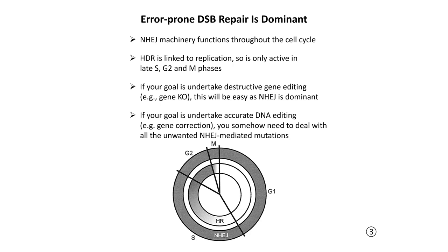If your goal is to undertake an accurate DNA edit — gene correction, a specific mutation in a regulatory element, or creating a specific model — then you need to deal with all the unwanted non-homologous end joining mutations. You've got to sift through all of this to find the cells which have the specific edits you're interested in. This is a hidden problem of genome editing that a lot of people perhaps don't consider when they first get started.